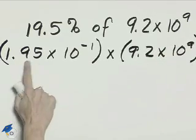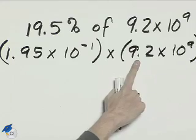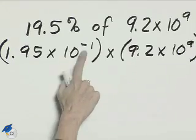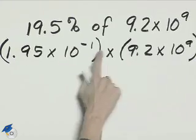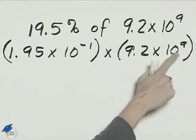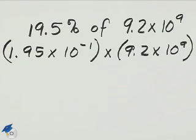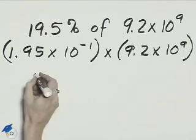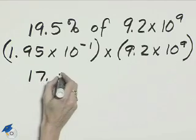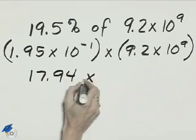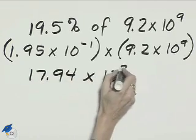We can multiply 1.95 times 9.2 and then we can multiply 10 to the negative 1 times 10 to the 9th and combine these exponents of negative 1 and 9. 1.95 times 9.2 is 17.94 times 10 to the 8th power.